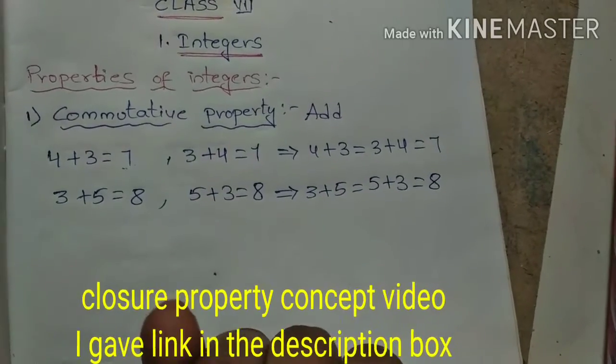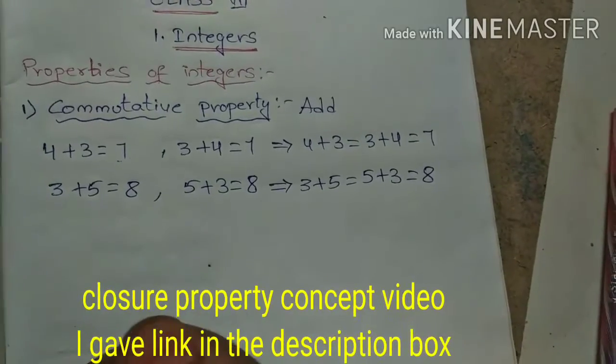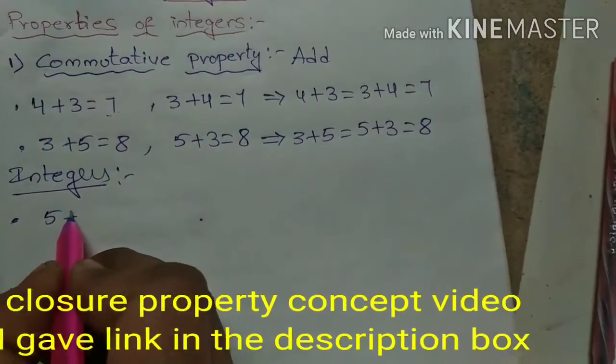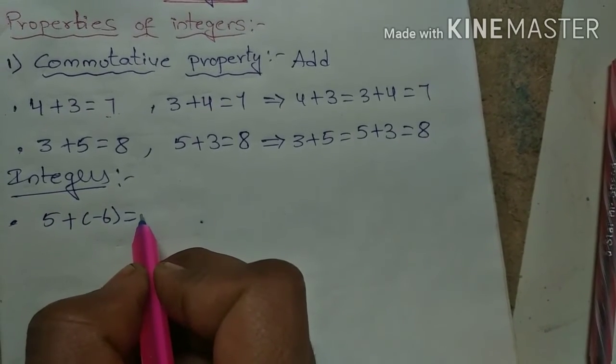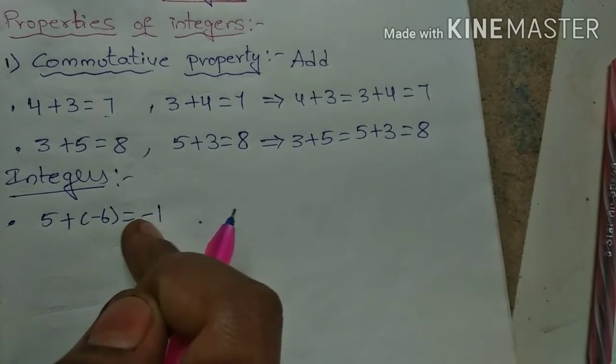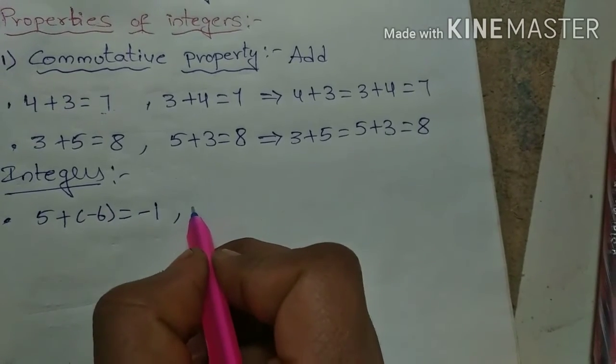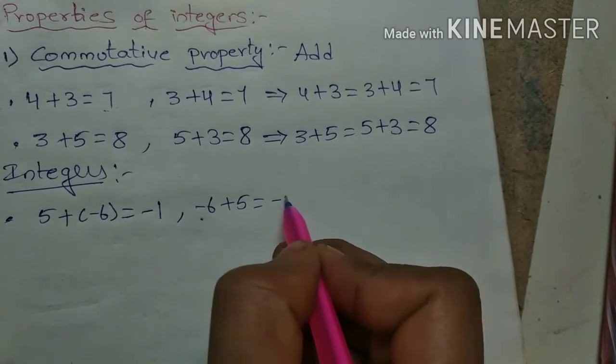Now I will take integers. 5 + (-6), how much is 5 + (-6)? Minus 1 only. The bigger number sign we should keep and subtract. Next, -6 + 5, how much? Same, minus 1 only.